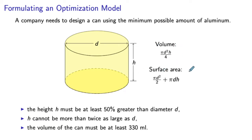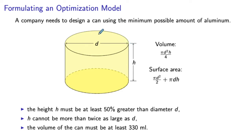The surface area is the sum of the surfaces of the disks on top and bottom, as well as the rectangular side. The area of the two disks is 2 times pi*d² over 4. The side is a rectangle with dimensions h and the circumference pi*d, so the total area of the side is pi*d*h, giving the total surface area as that full expression.